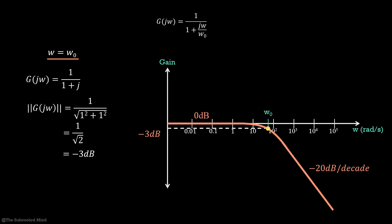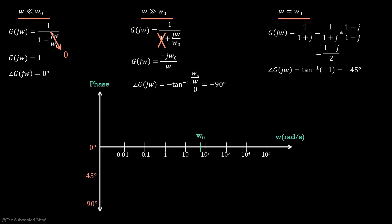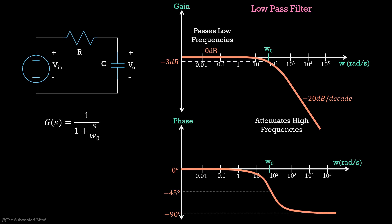We can do the same thing for the phase plot. We consider three scenarios: ω much less than ω₀, ω much greater than ω₀, and ω equal to ω₀. It turns out that for a pole, the phase changes by −90 degrees. The key inference from these plots is that an RC circuit is a low-pass filter: the gain is 0 dB for lower frequencies and is attenuated for higher frequencies. A pole causes a drop in gain of 20 dB per decade for frequencies greater than the pole frequency, and the phase changes by −90 degrees.